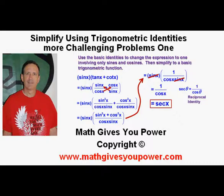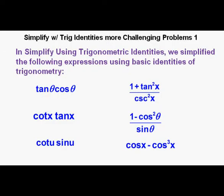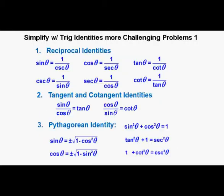Simplify using trigonometric identities — more challenging problems, part one. In the previous lesson we simplified six expressions. For these more advanced problems, we're going to use the same identities as before: the reciprocal identities, the tangent and cotangent identities, and the Pythagorean identities.